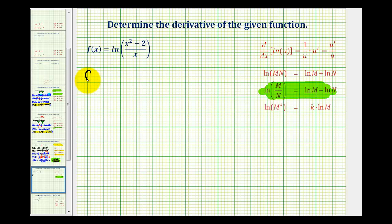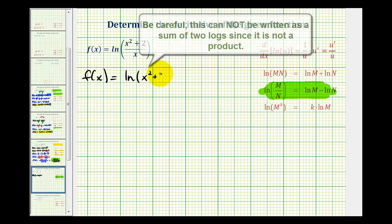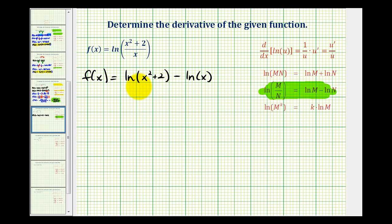We would have f of x equals natural log x squared plus two minus natural log x. And if we determine the derivative in this form it's going to be much more manageable.